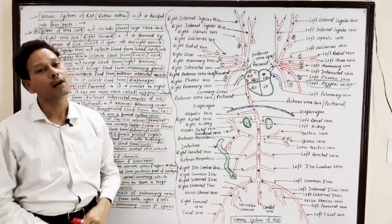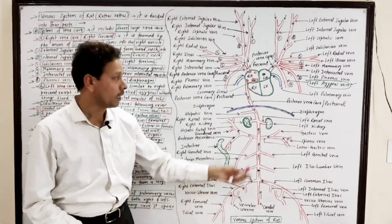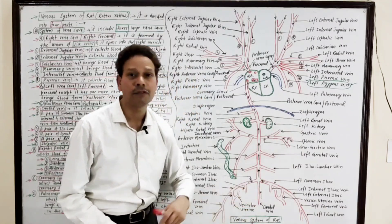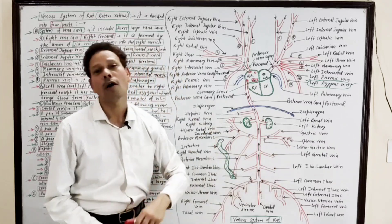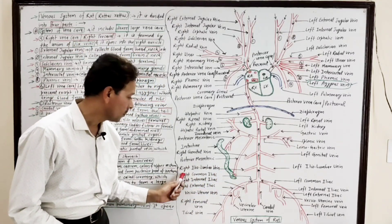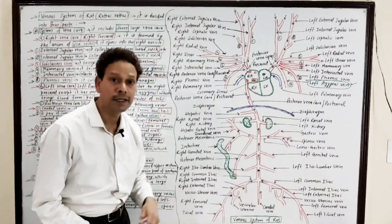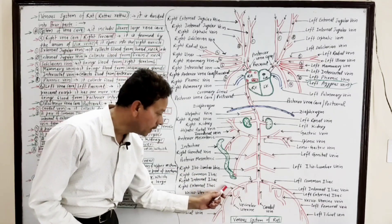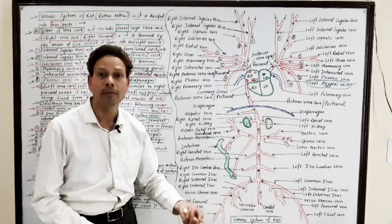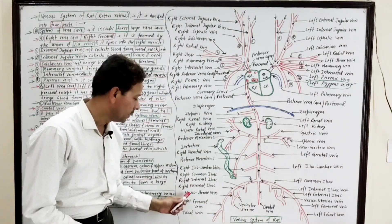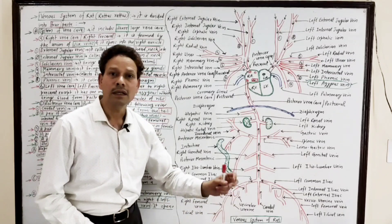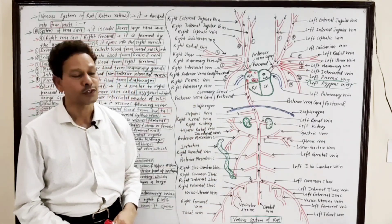The third vessel is the posterior vena cava, which brings blood from all over the lower parts of the body. It receives the caudal vein from the tail region, and a pair of common iliac veins. Each common iliac is formed by the union of the internal iliac and the external iliac. The external iliac further receives the femoral vein, which brings blood from the hind limbs, and the vesico-uterine vein, which receives blood from the urinary bladder and the uterine part of the female reproductive system.